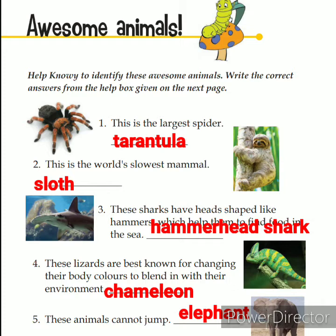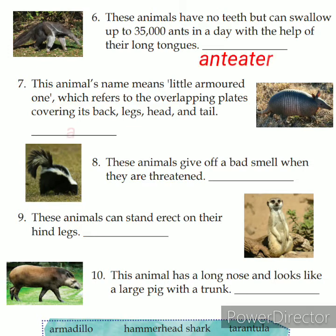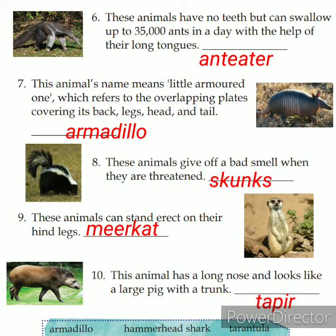Now look at page number 31. The sixth: these animals have no teeth but can swallow up to 35,000 ants in a day with the help of their long tongues. The answer is Anteater. The next: the animal's name means 'little armored one,' which refers to the overlapping plates covering its back, legs, head, and tail. The picture is of an Armadillo.